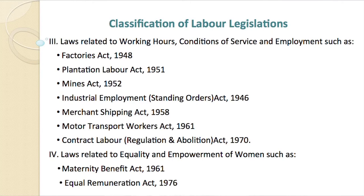Laws related to equality and empowerment of women include the Maternity Benefit Act 1961 and Equal Remuneration Act 1976. Laws related to the deprived and disadvantaged section of society include the Bonded Labour System Abolition Act 1976 and Child Labour Prohibition and Regulation Act 1986. Laws related to social security include the Workman's Compensation Act 1923, Employees State Insurance Act 1948, Employees Provident Fund and Miscellaneous Provisions Act 1952, Payment of Gratuity Act 1972, and Employees Liability Act 1938.